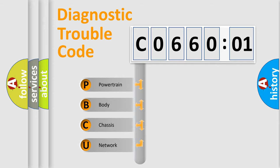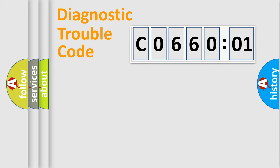We divide the electric system of automobile into four basic units: Powertrain, Body, Chassis, and Network.